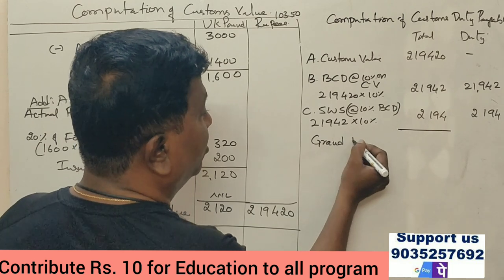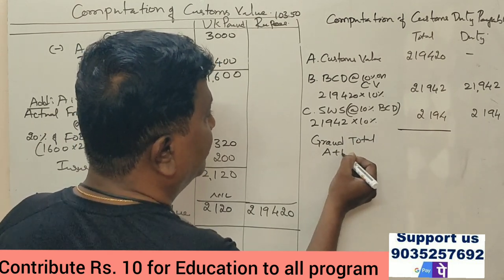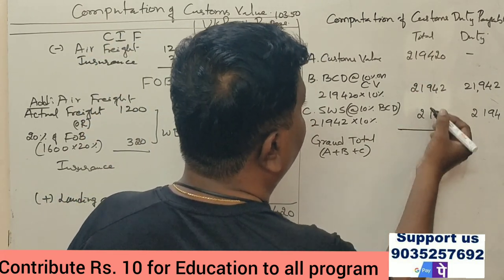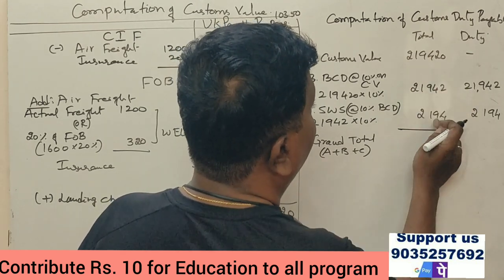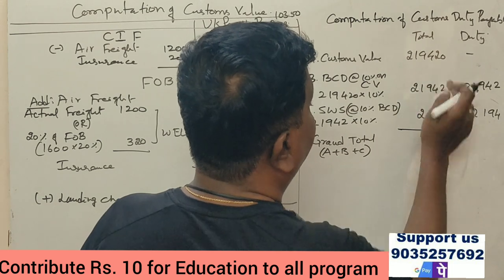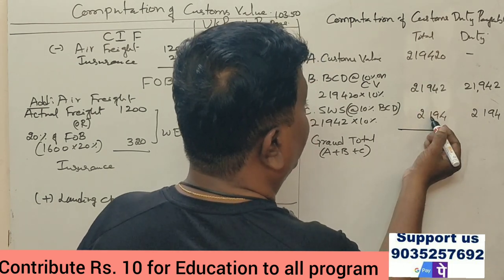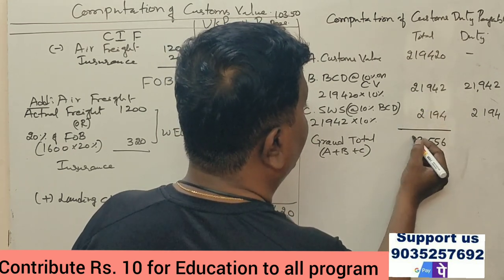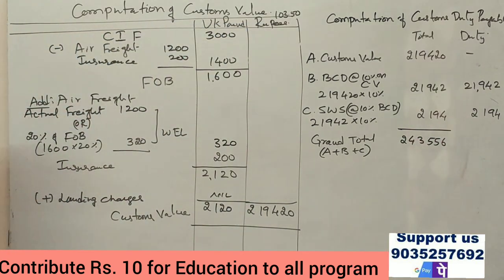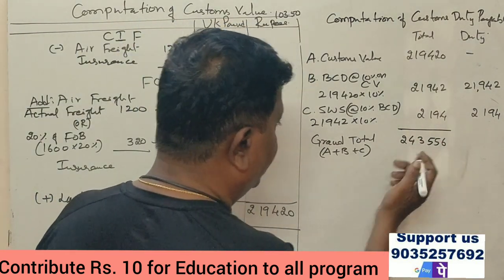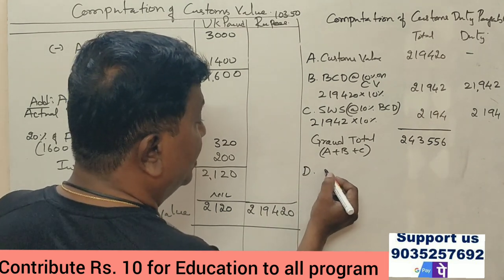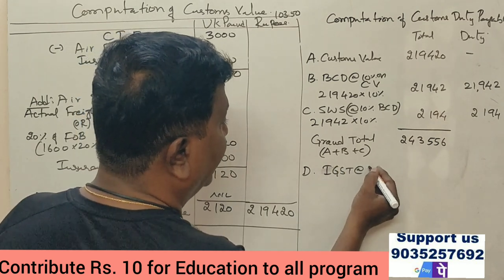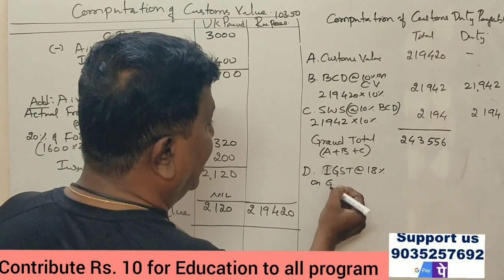The grand total (A + B + C) is ₹2,43,556. Point D: IGST is calculated at 18% on the grand total. So 18% of ₹2,43,556 = ₹43,840.